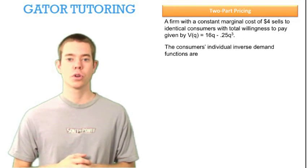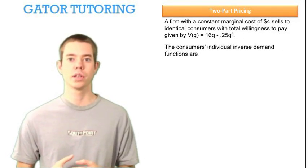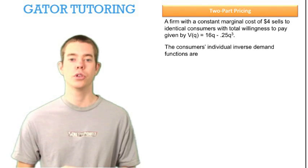A firm with a constant marginal cost of $4 sells to identical consumers that all have total willingness to pay given by total value equals 16q minus 0.25q cubed.